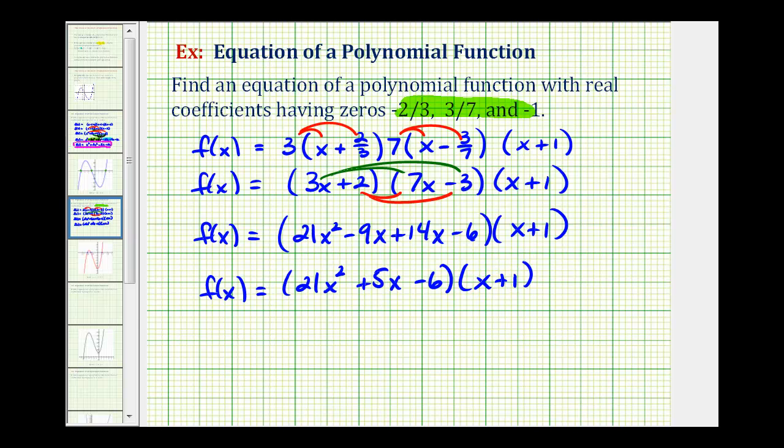Now we'll have six products: one, two, three, four, five, and six. So we'll have f(x) = 21x² times x, that's 21x³. 21x² times 1, plus 21x². 5x times x, that's plus 5x². 5x times 1, that's plus 5x.